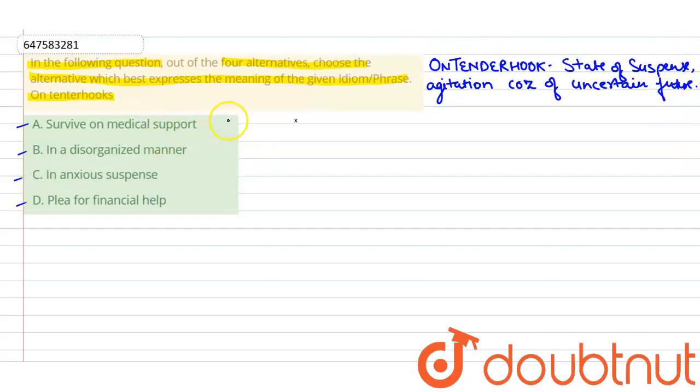So, first option is survive on medical support. That is, to keep someone alive on medical support. So, this is not an alternative for uncertainty or agitation. It is a state. To survive on medical support.